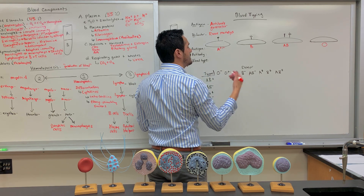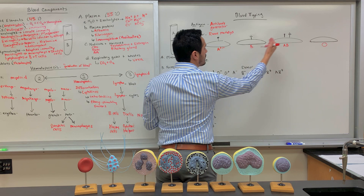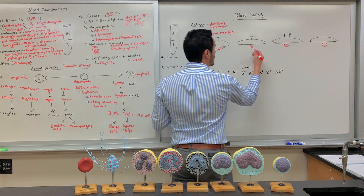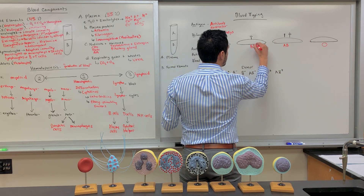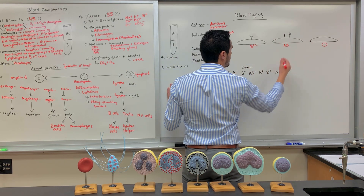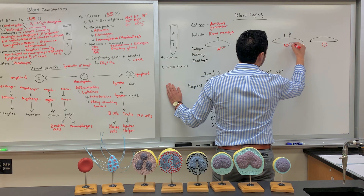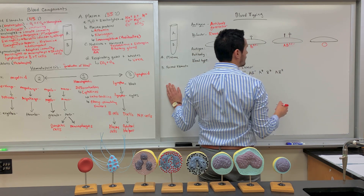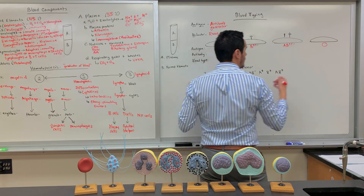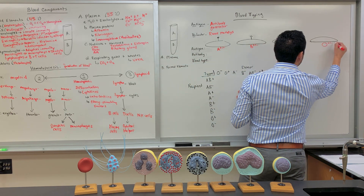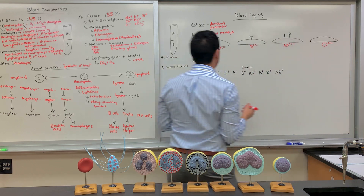It's the same thing as you go along each individual blood type: you can be B positive or B negative, AB positive or AB negative, and O positive or O negative.